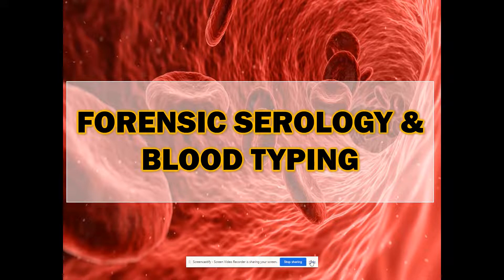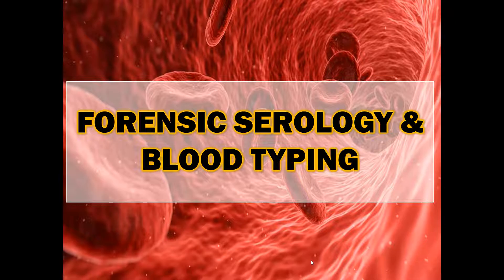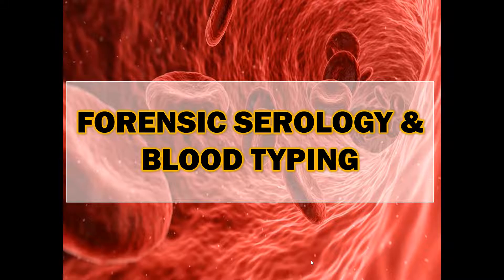Forensic students, we are starting on our blood evidence section of forensic evidence, which is unit two, and we're going to cover blood in a couple different lessons. Today specifically, we're going to focus on forensic serology and then a division of forensic serology, which is going to be blood typing. In future lessons, we're going to move more into the physics of blood and how it moves and travels, and that's going to be in our blood spatter lessons.